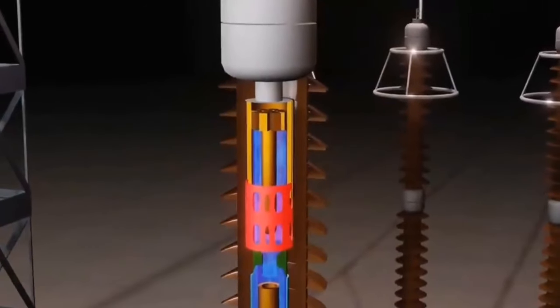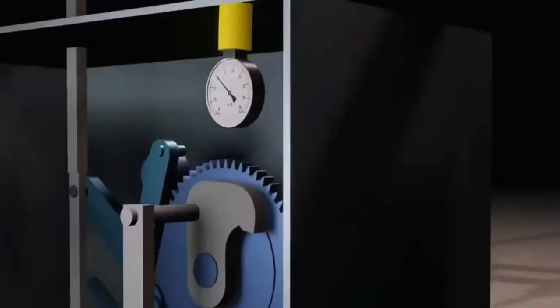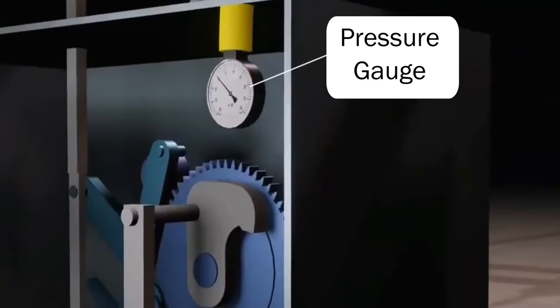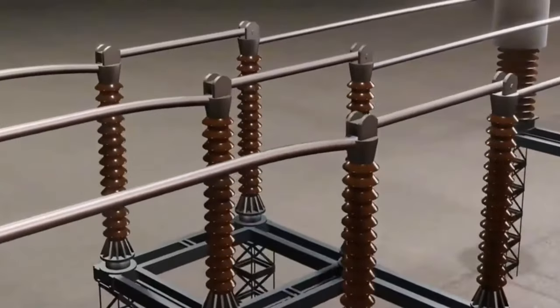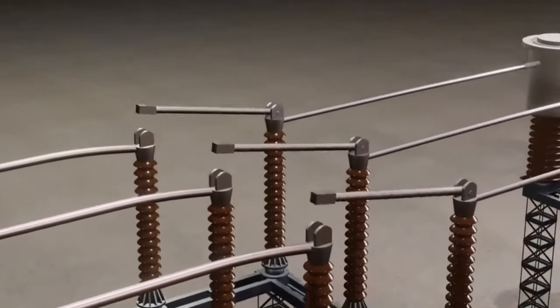Of course, SF6 will also be consumed, so a pressure gauge is installed at the top of the circuit breaker to replenish the gas once the pressure drops. Additionally, for added safety measures, all these contacts need to be opened to achieve double security.